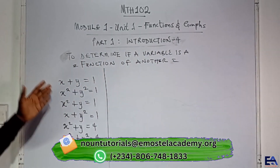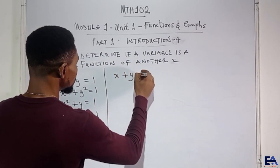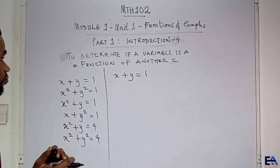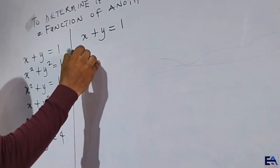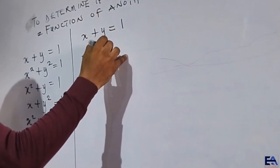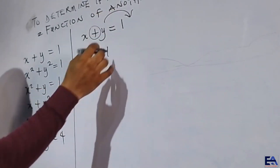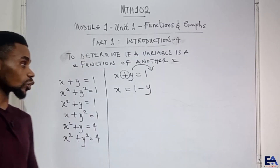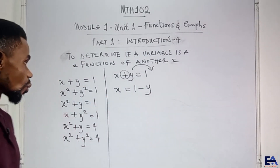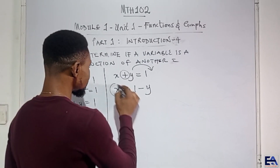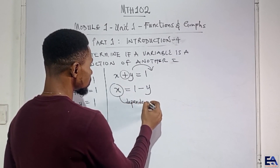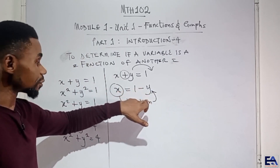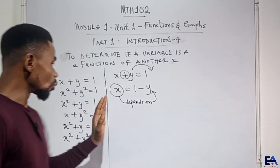Now, consider this first one: x plus y is equal to 1. In this condition, obviously, the two variables — any one of the two — if I choose to send, maybe I send x, I send y to the other side. This one was plus before; by the time it gets to the other side it becomes minus. So x alone is left, y moved to the other side as minus y. So this gives x is equal to 1 minus y. In this scenario, we say that x depends on y.